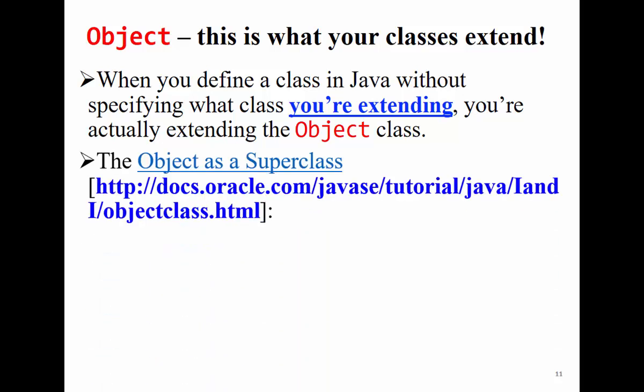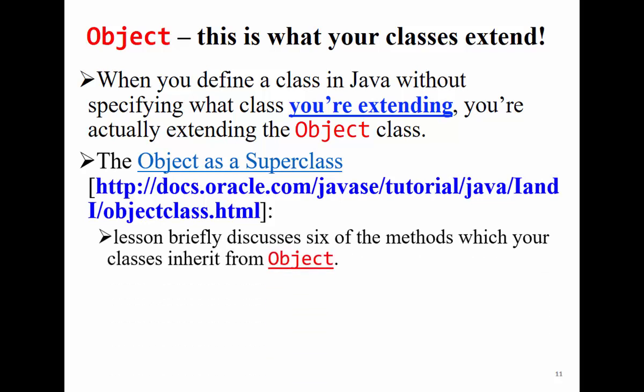I won't go into full detail about the Object class here — there is a link on the slide, please go and read more about it. It's the parent of every class in Java, referred to as the super class — the super of the super. Everything in Java is an Object. The brief discussion we're having today covers the six main methods inside Object that we need to revisit and override, so that our objects behave correctly.